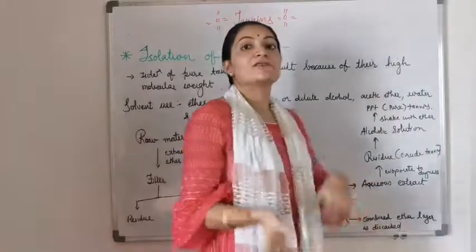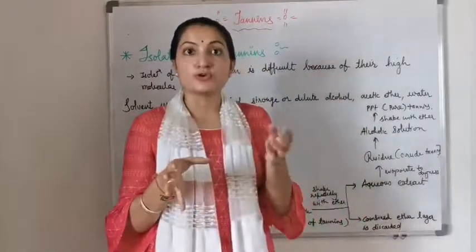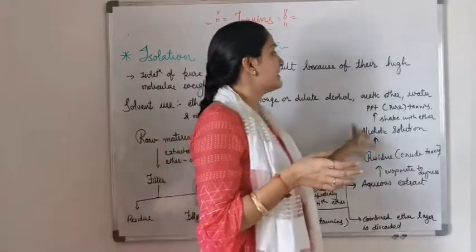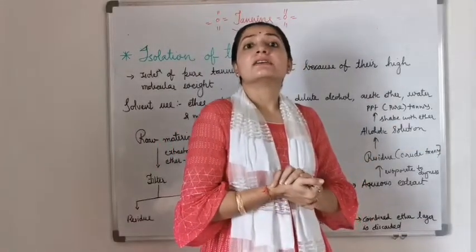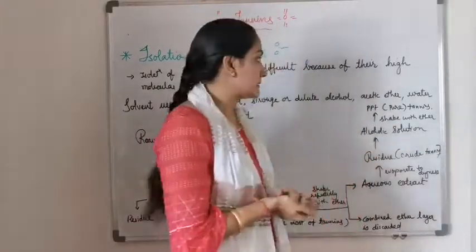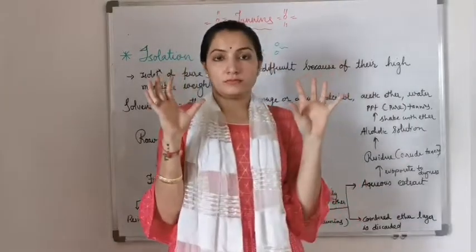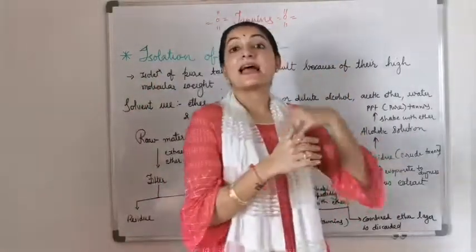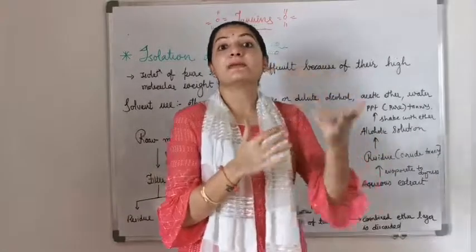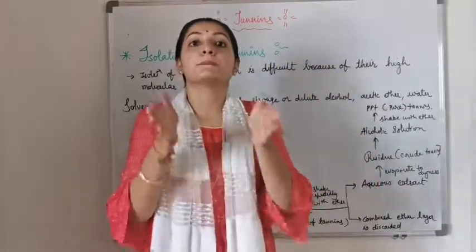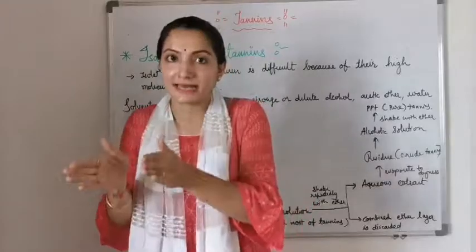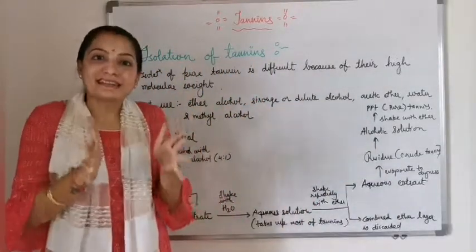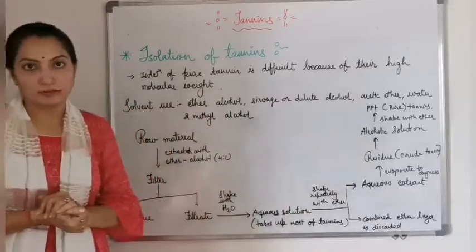This residue is tannin but in crude form, not pure tannin. So we take this crude tannin or residue, add alcohol to dissolve it, then add ether. After adding ether, a precipitate forms which is the pure precipitate of tannin. This is the complete method for isolating tannins from crude plant material.